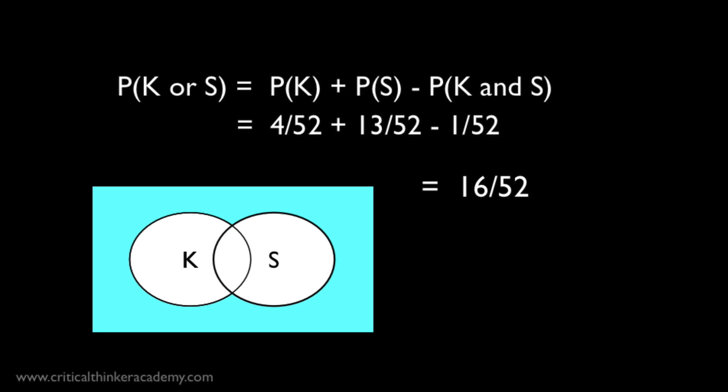And this gives us the algebraic expression that we need to fix the error caused by double-counting the overlap region. You just add up the probabilities of the two events taken separately, and then subtract the probability associated with the conjunction of the two events. In this case, there's only one card that is both a king and a spade. So the probability of drawing that card is just 1 in 52. So we subtract 1 in 52 from the sum, and we get the correct answer, which is 16 out of 52, rather than 17 out of 52.